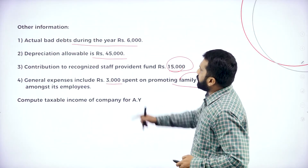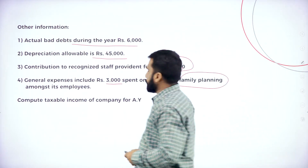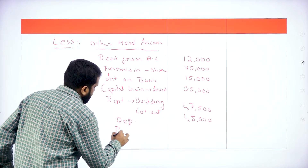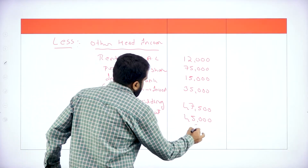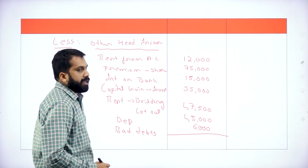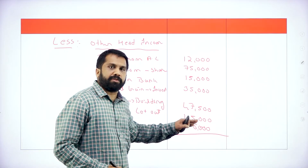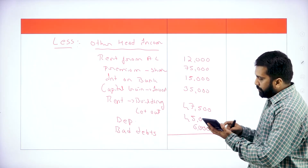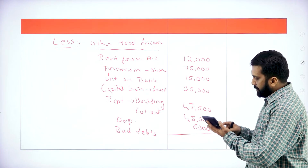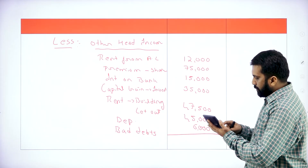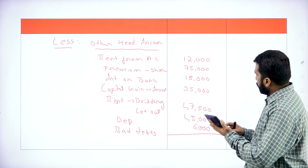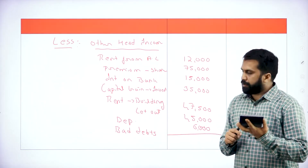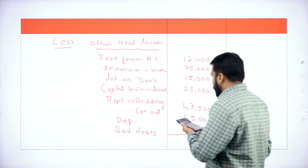In the adjustment, we have depreciation 45,000 and bad debts 6,000. Whatever comes under adjustment, every time it comes under other head items only — allowable items. These are the things we are supposed to deduct. Total other head income deductions come to 2,35,500.